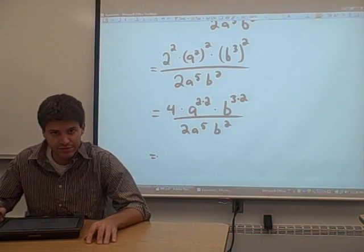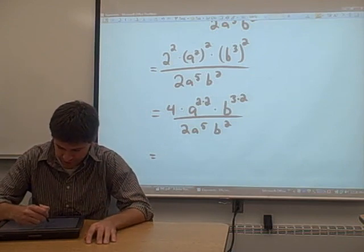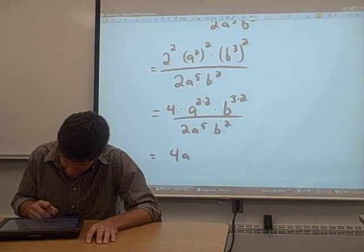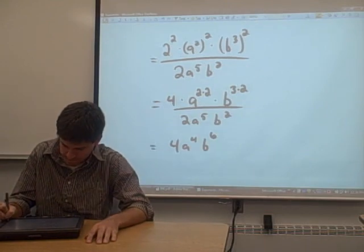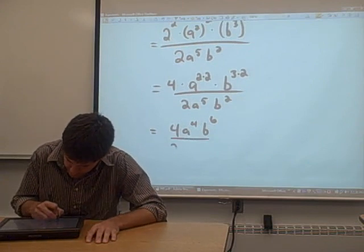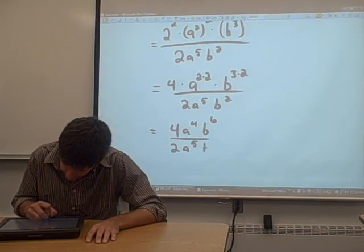So it just comes down to a little bit of algebra here. 2 times 2 is 4, so we get 4a to the 4th b to the 6th, all of that over 2a to the 5th b squared.